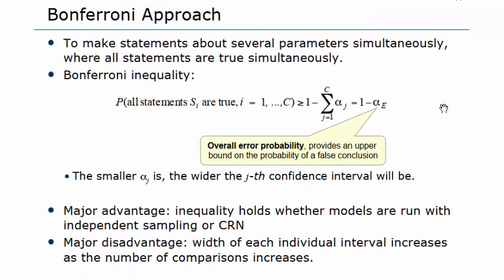Next, we have the Bonferroni approach to multiple comparisons. Suppose that c confidence intervals are computed and the i-th interval has confidence coefficient 1 minus alpha_i. Let s_i be the statement that the i-th confidence interval contains the parameter being estimated, or the difference of two parameters to be estimated. This statement might be true or false for a given set of data, but the procedure is designed so that statement s_i will be true with probability 1 minus alpha_i.